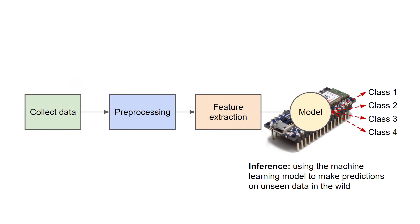Inference is a little different in that it just requires collecting data, immediately transforming that data into features, and then performing a forward pass in our model. The output of the model is a prediction — in the case of classification, it's a prediction as to which class the model thinks the data belongs to. We'll get more into training and inference in the next module, and we'll actually deploy the machine learning model to our embedded system.